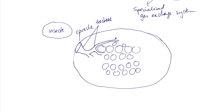Nearest to the cells we have the thinnest version of these, called the tracheoles. These are at the very ends of the branches and they are the thinnest structures — only one cell thick — and they go right through the cells.